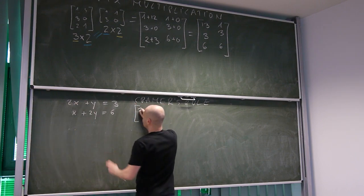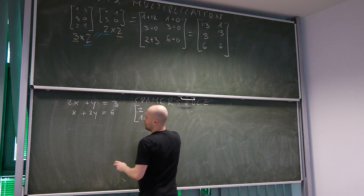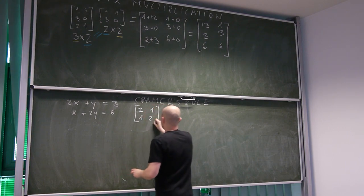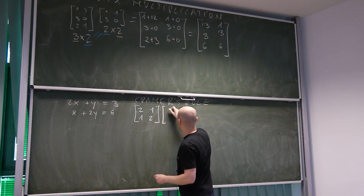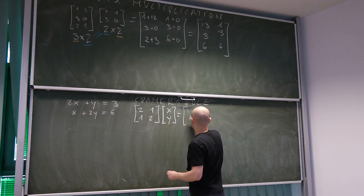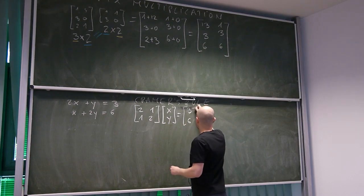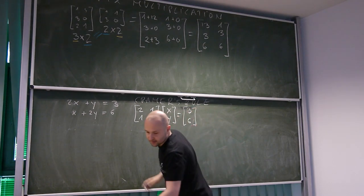So we've got coefficients two, one, one, two. Right? Now, variables and constant terms.